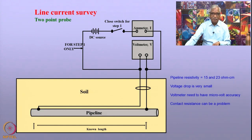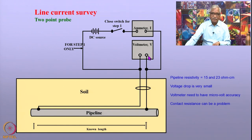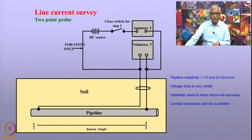However, if the resistivity of the pipeline is not known, an additional circuit is used wherein a known amount of current is passed through the two points using a DC source. By simultaneously measuring the voltage for a known current, it is possible to estimate the resistance of the pipeline in that segment. Generally, pipeline resistivity lies in the range of 15 to 23 ohm-centimeters, so the voltage drop is significantly small and the voltmeter must have resolution in terms of microvolts.